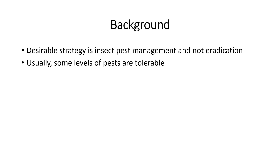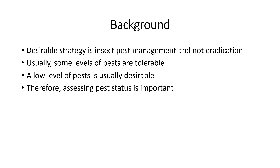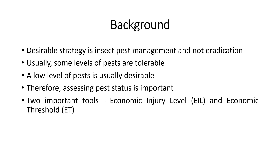Usually, some levels of pests are not only tolerable but also desirable to maintain populations of natural enemies. Therefore, assessing pest status is important, and this can be done by sampling. Two important tools in IPM used for making decisions regarding pest management are Economic Injury Level and Economic Threshold, commonly referred to as EIL and ET respectively.